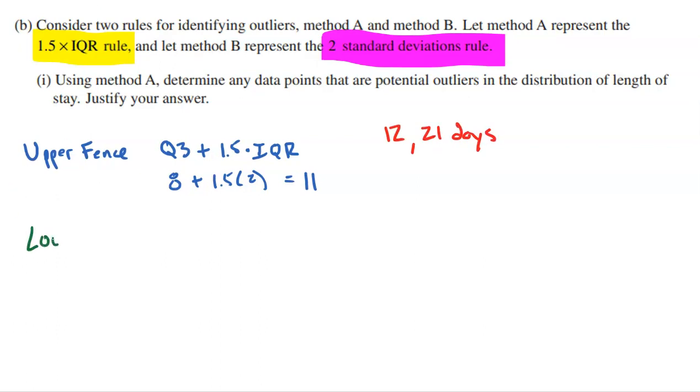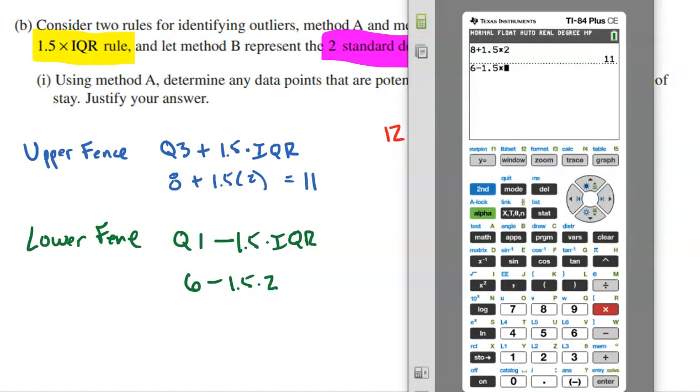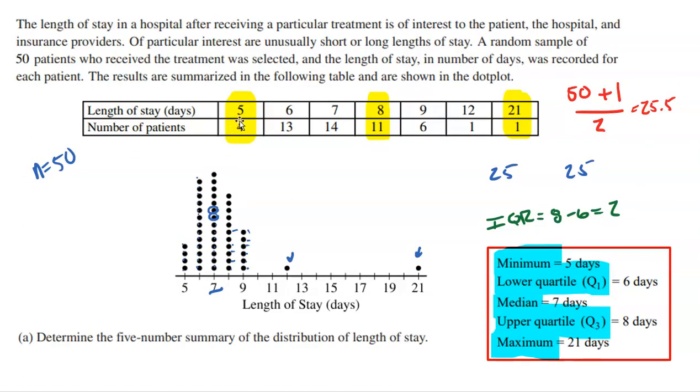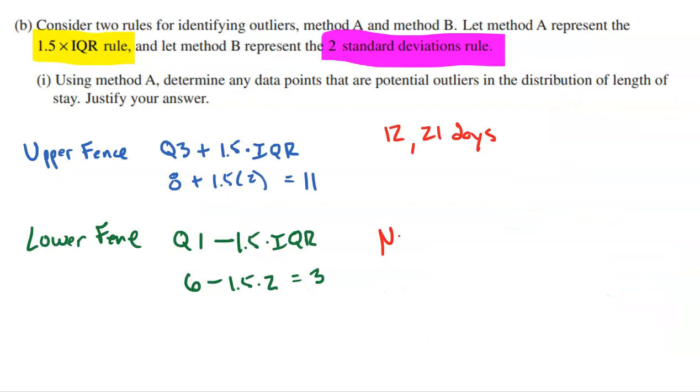Then I'm going to find my lower fence. My lower fence is found by taking Q1 minus 1.5 times the IQR. My lower quartile Q1 was six minus 1.5 times two. Six minus 1.5 times two is three. Did anybody stay less than three days? Go back and look at your data. No, the lowest number of days stayed at the hospital for this particular treatment was five. Nobody stayed less than three. So that means there are no lower outliers.